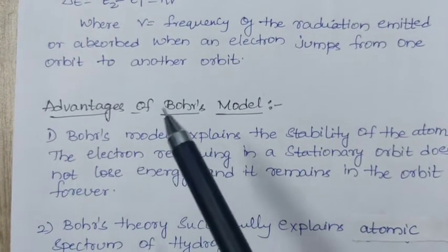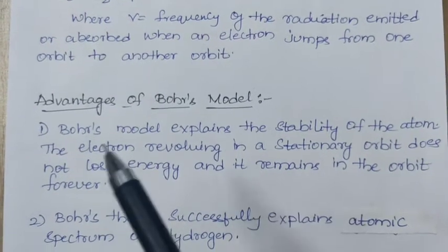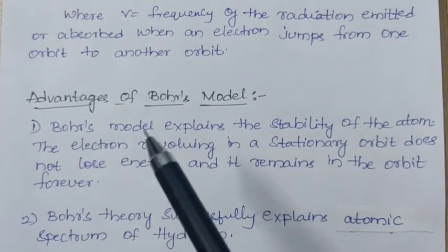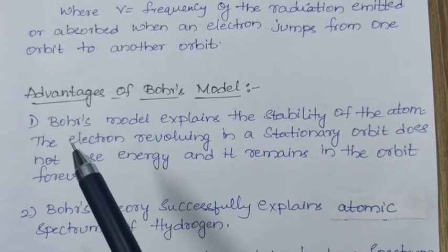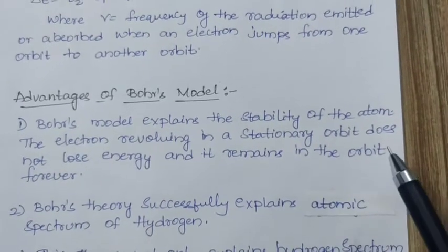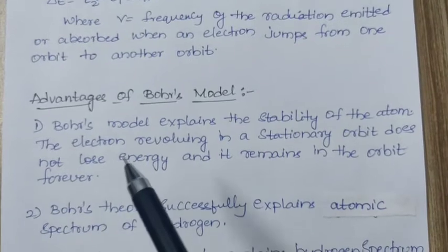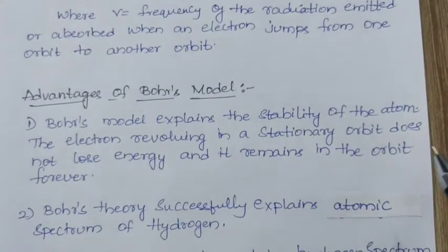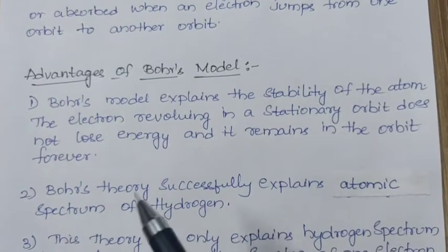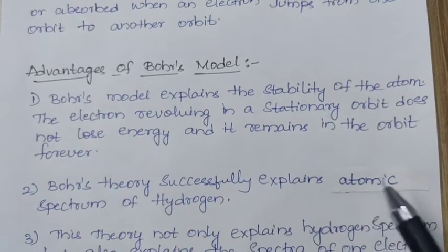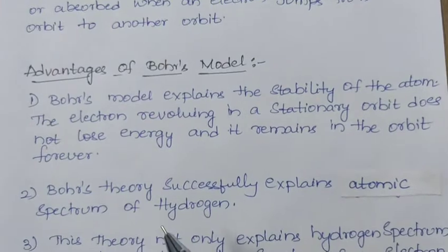Next, we will see the advantages of Bohr's model. Here, Bohr's model explains the stability of the atom. The electron revolving in a stationary orbit does not lose energy and it remains in the orbit forever.